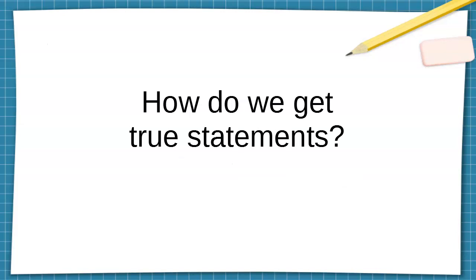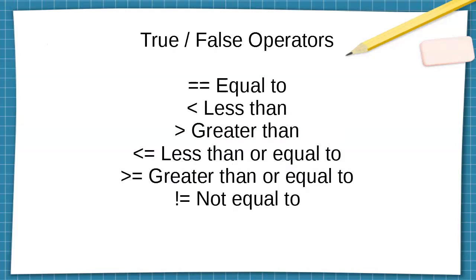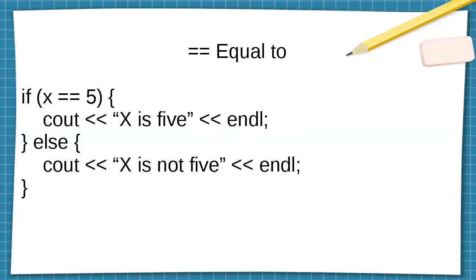So how do you get these true or false comparisons? Well, we have these operators. These operators produce either true or false as a result. The double equal sign — remember, it's not single equals — the double equals is the equal-to operator. Less than, greater than just as you'd expect, less than or equal to, greater than or equal to, and not equal to. All these are your operators.